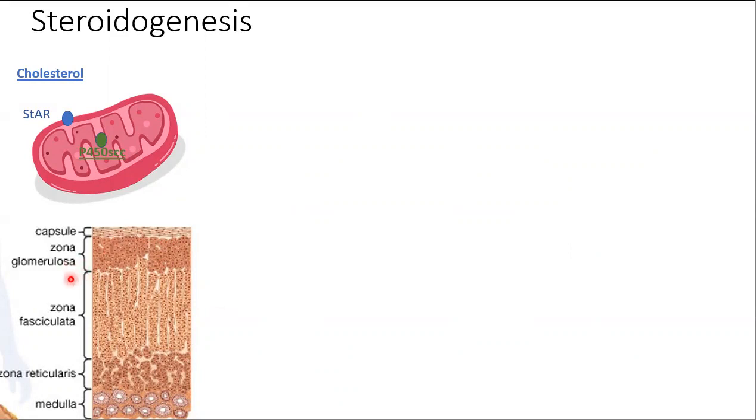The adrenal cortex is divided into three different zones: the zona glomerulosa, fasciculata, and reticularis.